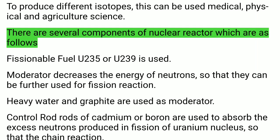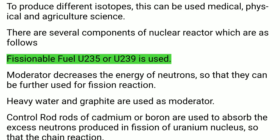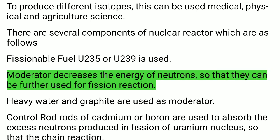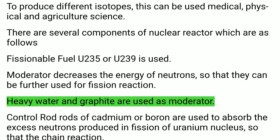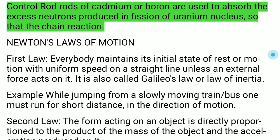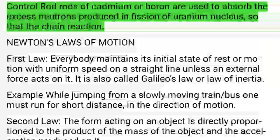Components of a Nuclear Reactor: Fissionable fuel — U-235 or U-239 is used. Moderator — decreases the energy of neutrons so they can be used for further fission; heavy water and graphite are used as moderators. Control rods — rods of cadmium or boron absorb excess neutrons produced in fission of the uranium nucleus to control the chain reaction.